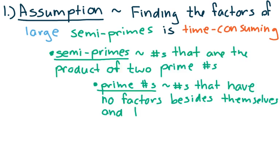Dissecting this definition, let's get more into what each of these individual words mean in this assumption. Semi-primes, first of all, are simply numbers that are the product of two prime numbers.